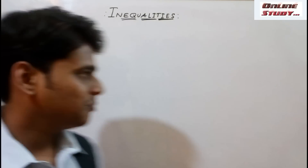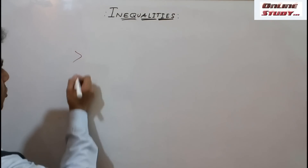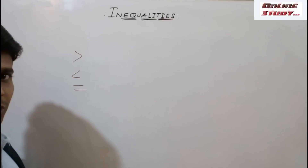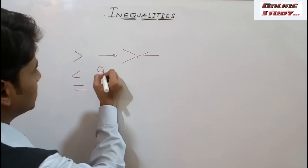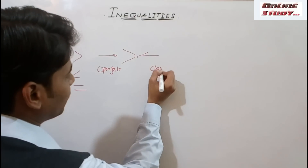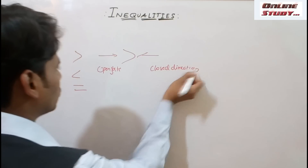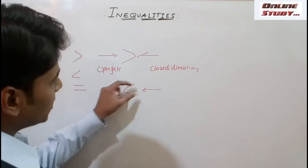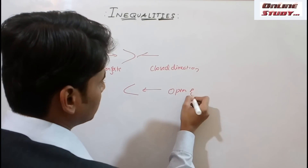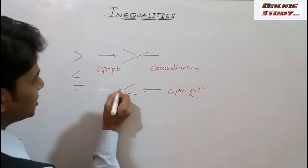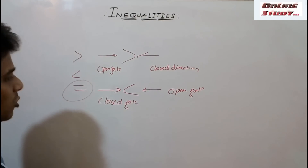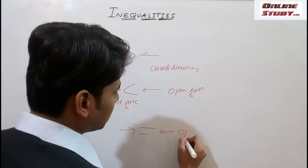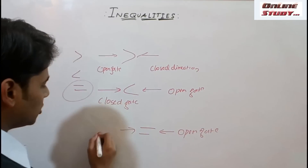Before taking the concept of inequalities, let's understand the basics. In inequalities, you will come across three important symbols. The first symbol represents an open gate from one direction and a closed gate from the other direction. The second symbol also has an open gate on one side and a closed gate on the other. The third symbol — equal to — is open from both ends.